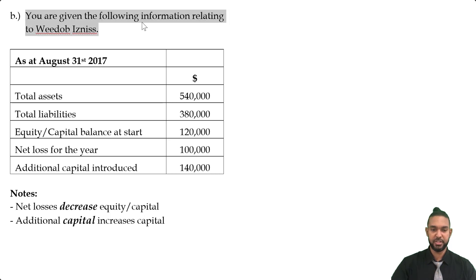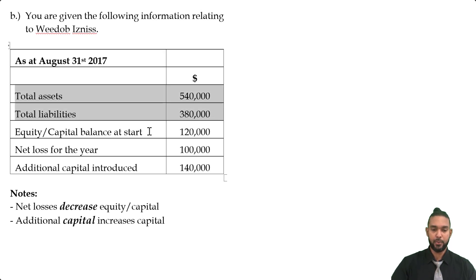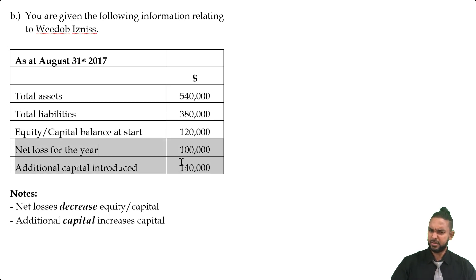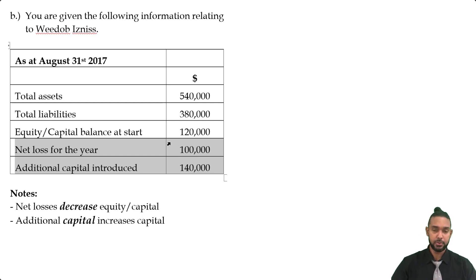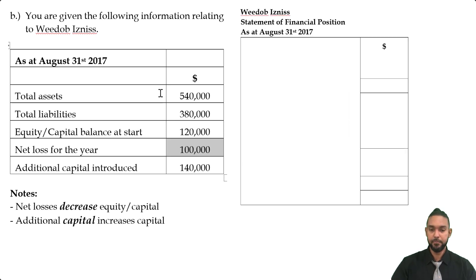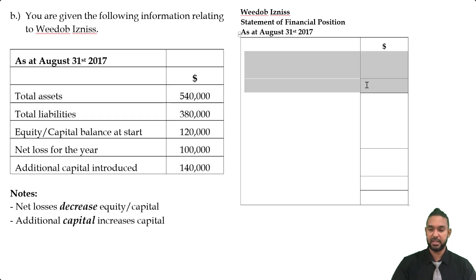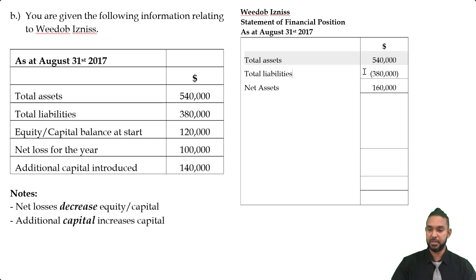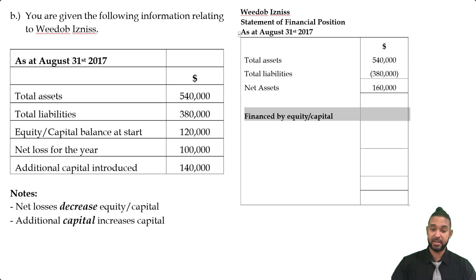You are given the following information relating to Wido business as at August 31st, 2017. We're seeing total assets and total liabilities on top, and we have a capital at start, a net loss for the year, and additional capital introduced — they're kind of the opposites of what we just saw. We're going to put in total assets minus total liabilities on top to get net assets: 540 minus 380 gives us 160. So how are those net assets financed? They're financed by capital. We're going to start with our balance at start, which is 120.